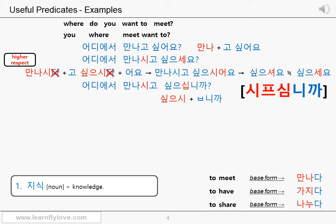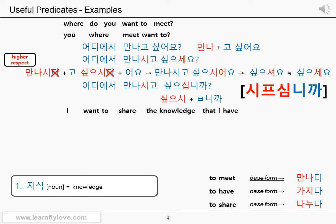The interrogative ending of the higher-respect form 니까 sounds more formal than the declarative 니다 — it sounds like soldiers talking to senior soldiers, or someone making a speech to an audience. In conversation, using the casual anaphoric ending 요 is preferable. Next sentence: 'I want to share the knowledge that I have.' See how complicated a sentence you can make based on what you've learned. The entire clause 'that I have' modifies the object 'knowledge,' and you already know how to make a modifier.